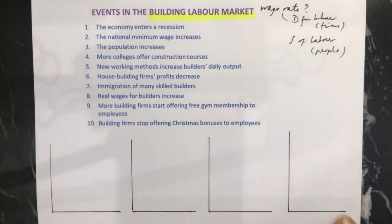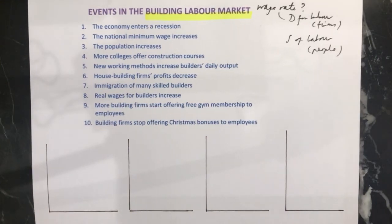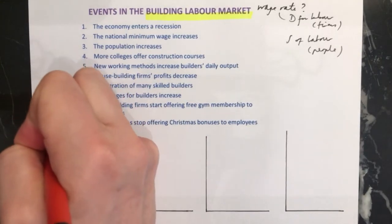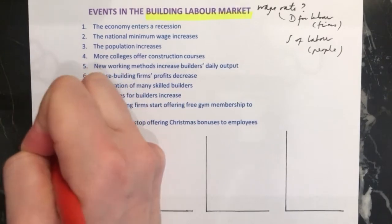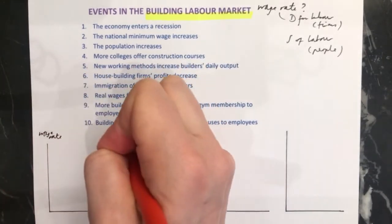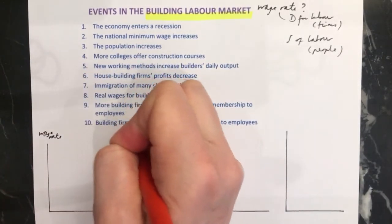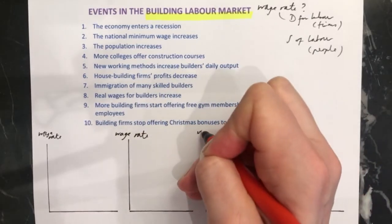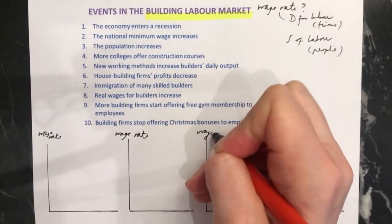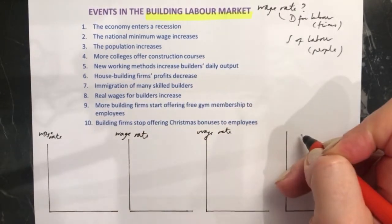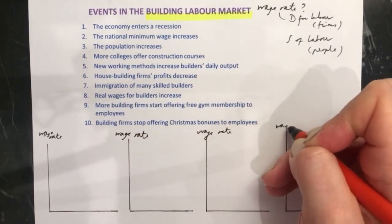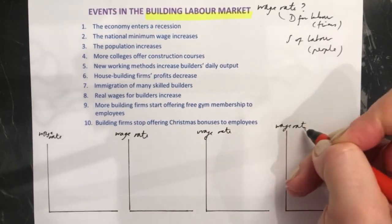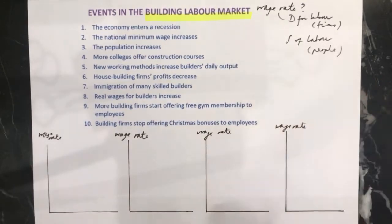I'm going to draw four diagrams at the bottom because there are four scenarios that could occur. All of these you need to be labelling your y-axis — remember, y in the sky — wage rate. Label it at the end of the axis up here so that it's out of the way of everything going on in the diagram.